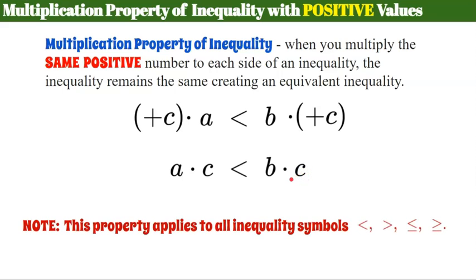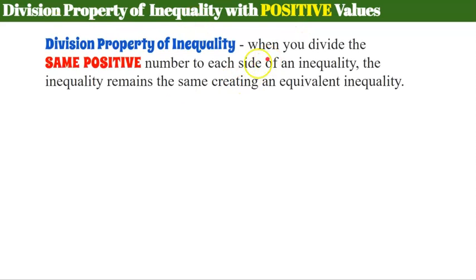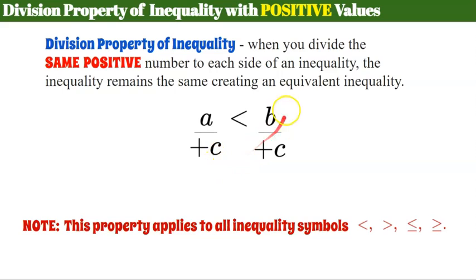This property applies to all inequality symbols: less than, greater than, less than or equal to, and greater than or equal to. The division property of inequality with positive values states that when you divide the same positive number from each side of an inequality, the inequality remains the same, creating an equivalent inequality. Dividing both sides by positive c gives an equivalent inequality, and this applies to all four inequality symbols.